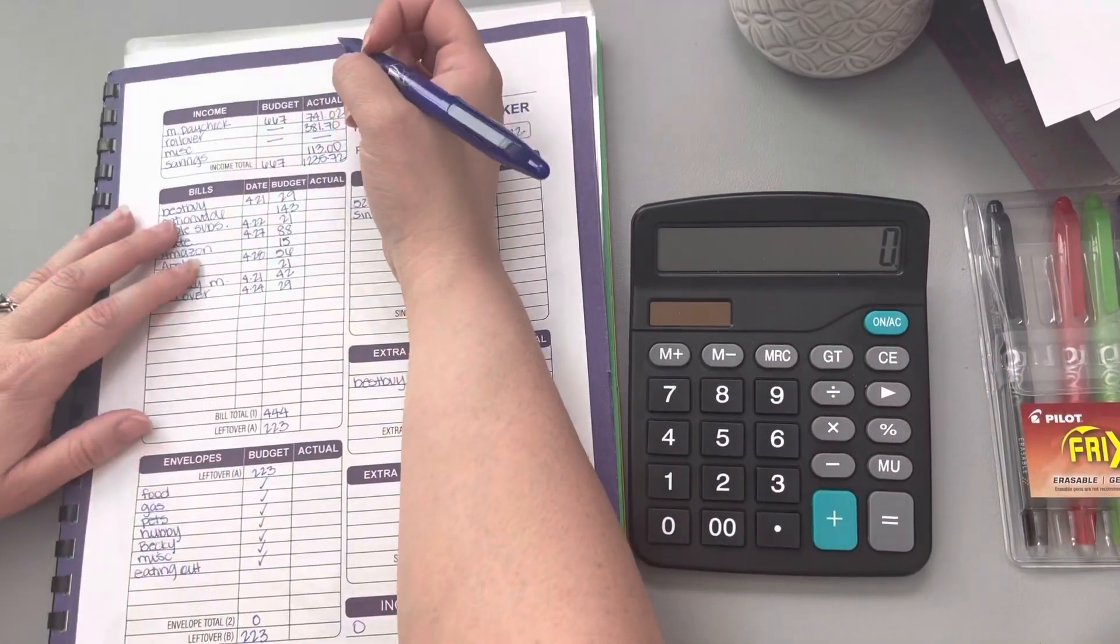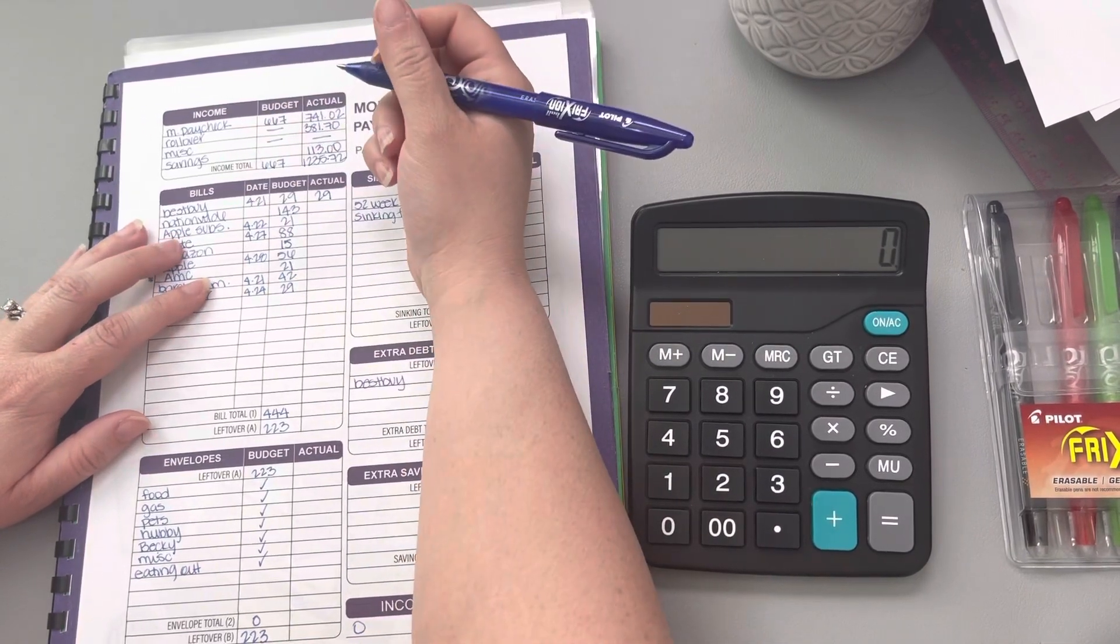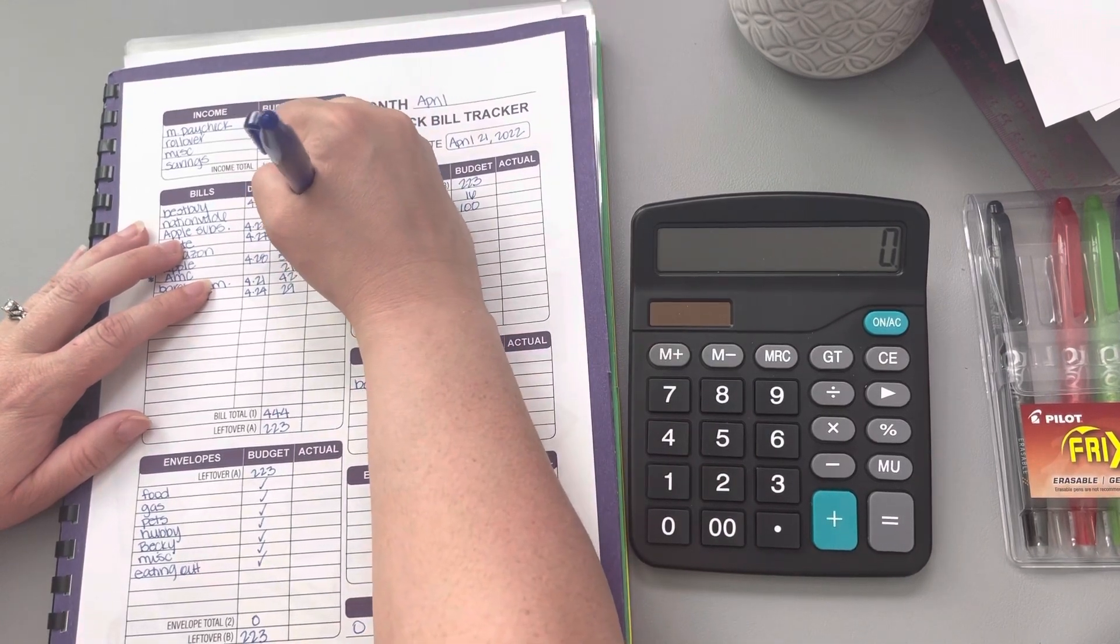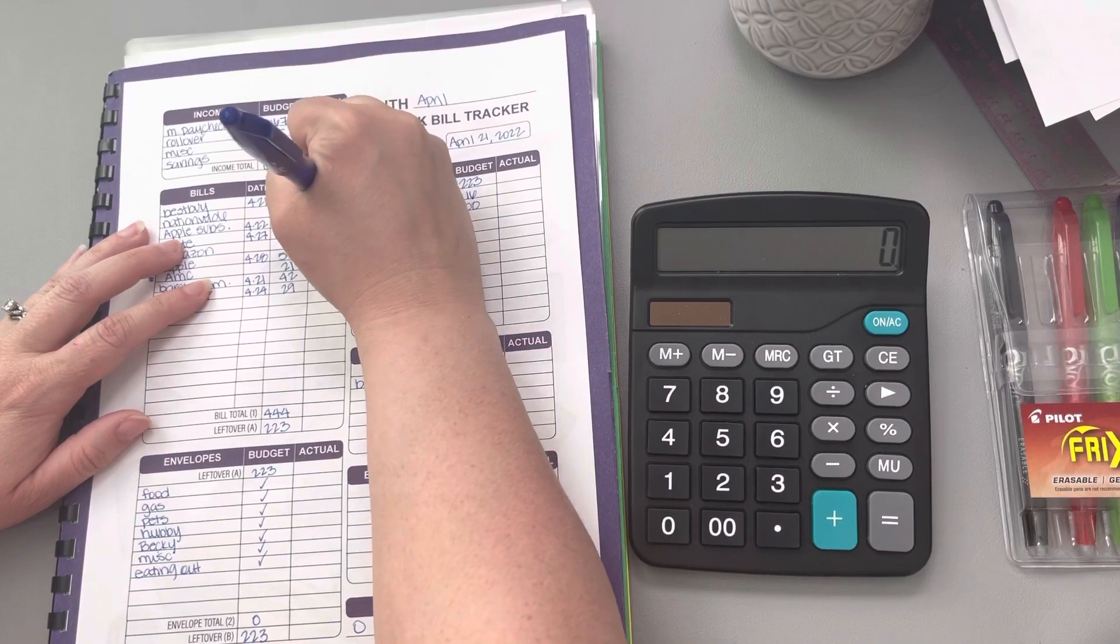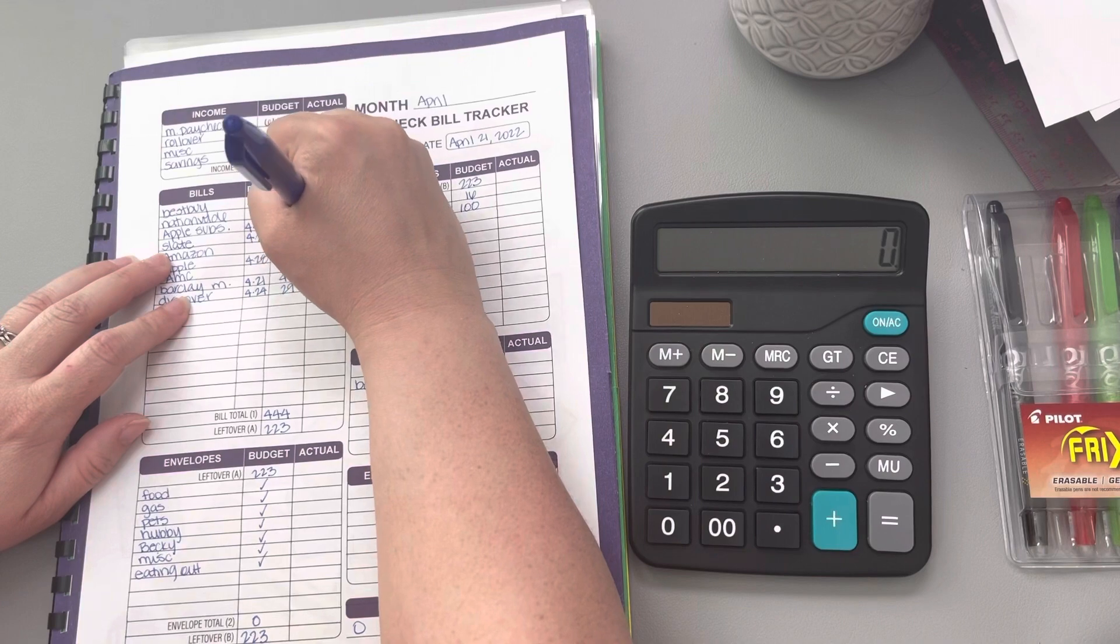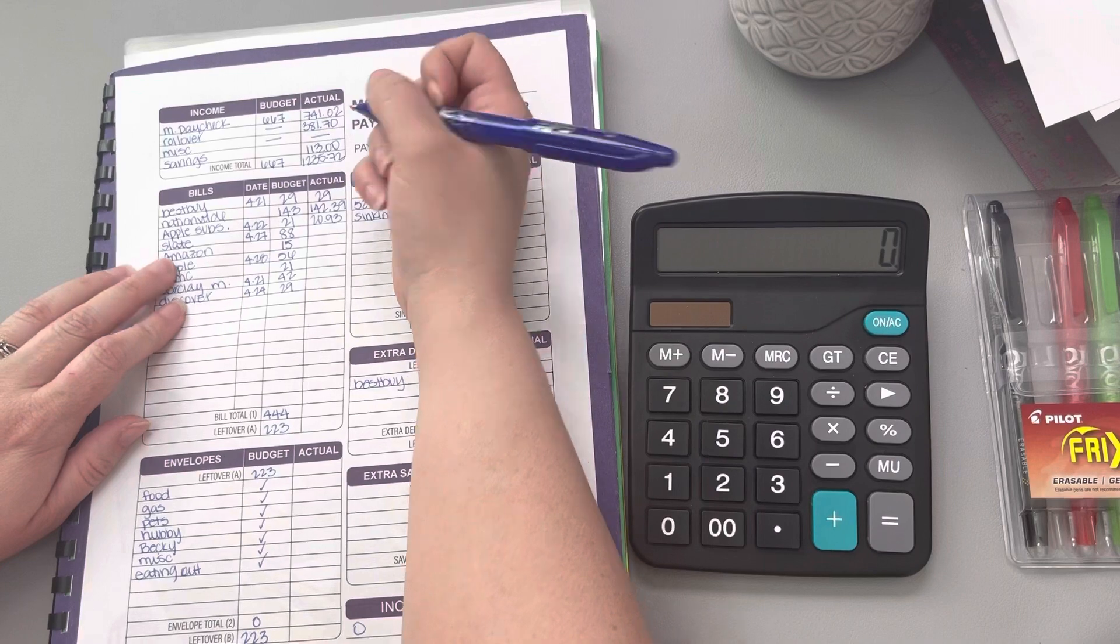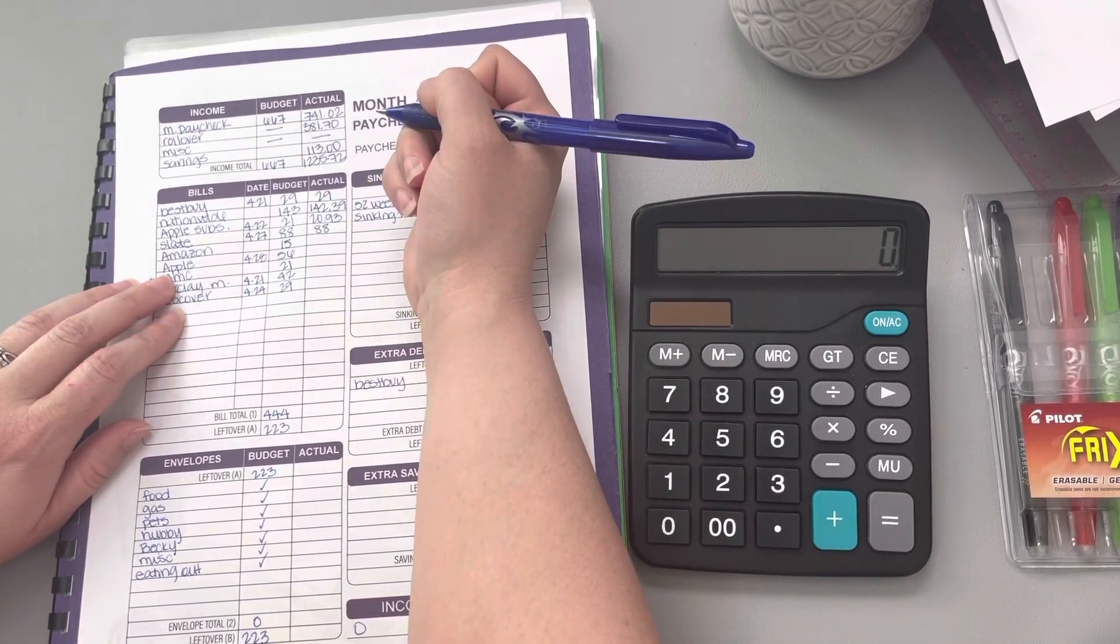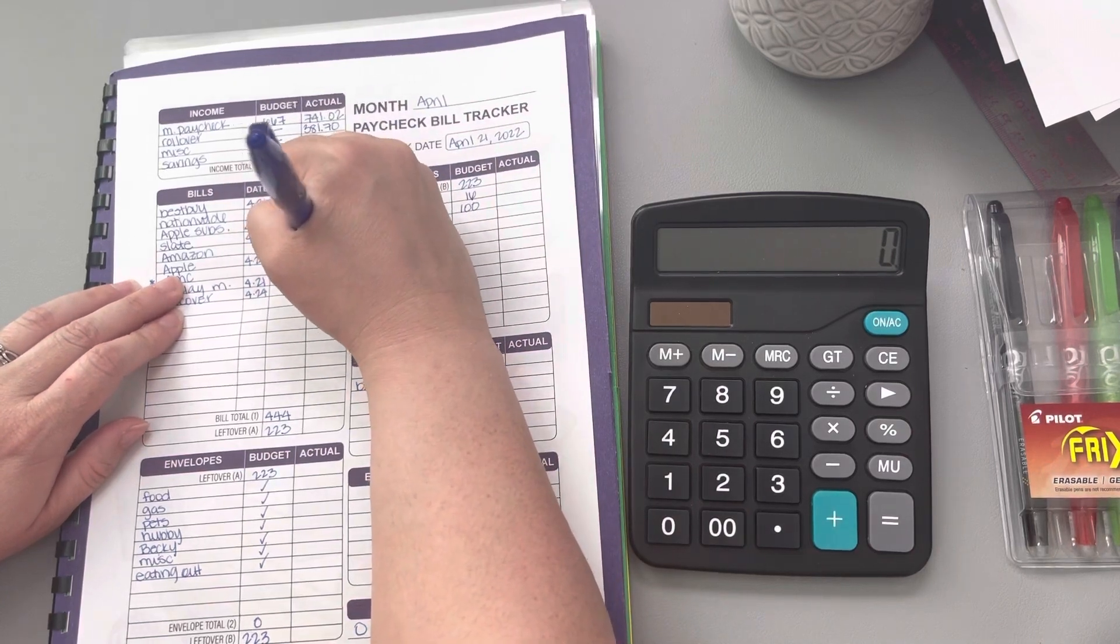Now, minimum on Best Buy is $29. Our Nationwide, which is our pet insurance, comes in at $142.39. The Apple subscription came in at $20.93. The Chase Slate was $88. Amazon is $14.13. The account for my husband's phone was $56.15.